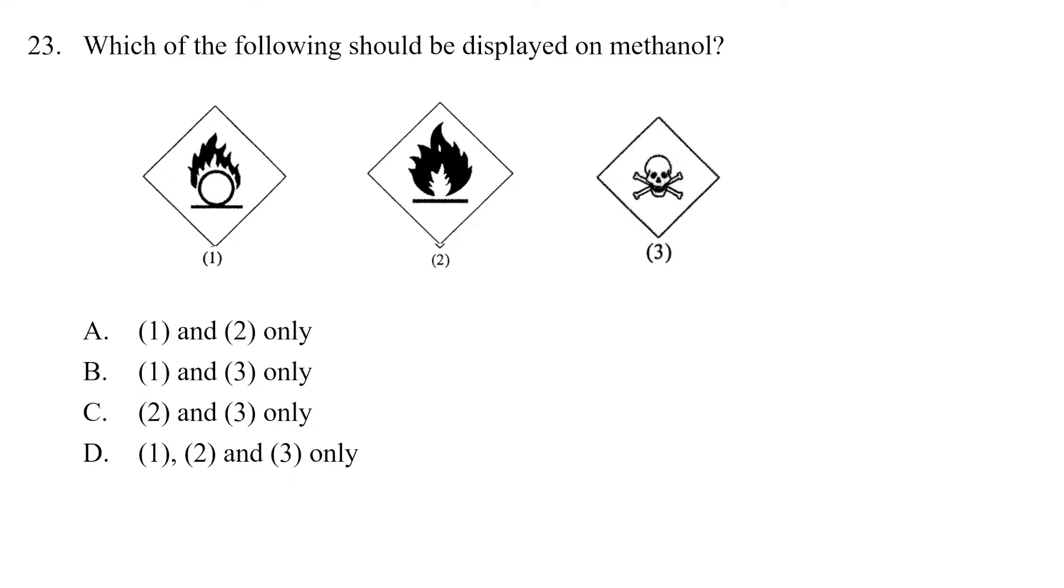2020 question 23: which of the following should be displayed on methanol? You're given three hazard warning labels. Now methanol is a type of alcohol, and if you've studied the elective part of book six, industrial chemistry, you should immediately know what's the answer, but I'm going to go through it anyway.